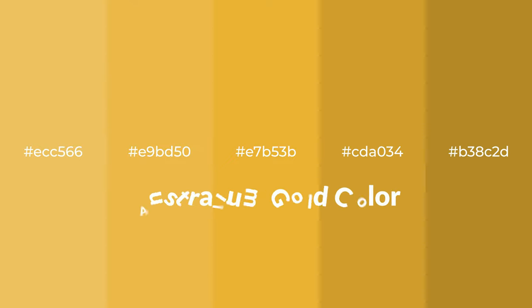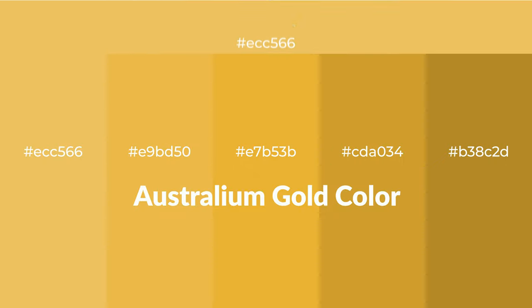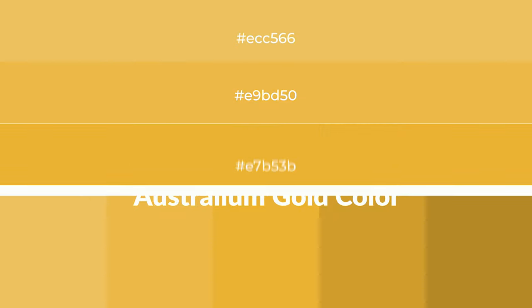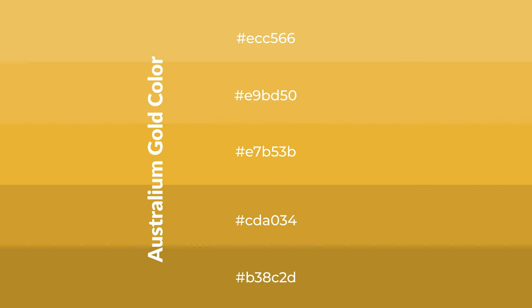Warm shades of australium gold color with yellow hue for your next project. To generate tints of a color we add white to the color, and tints create light and exquisite emotions. To generate shades of a color we add black to the color, and it is used in patterns, 3D effects, and layers. Shades create depth and drama.